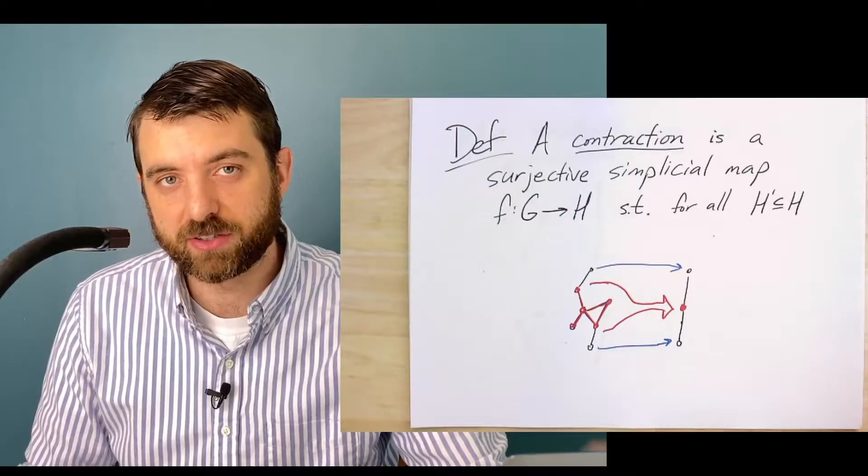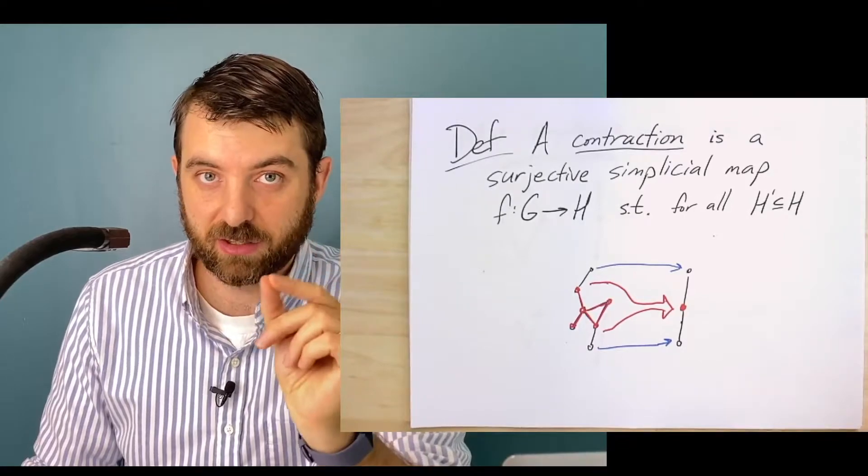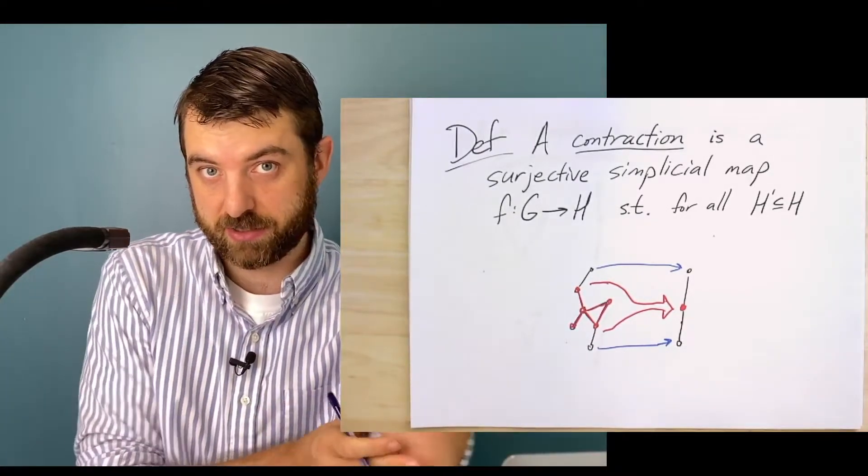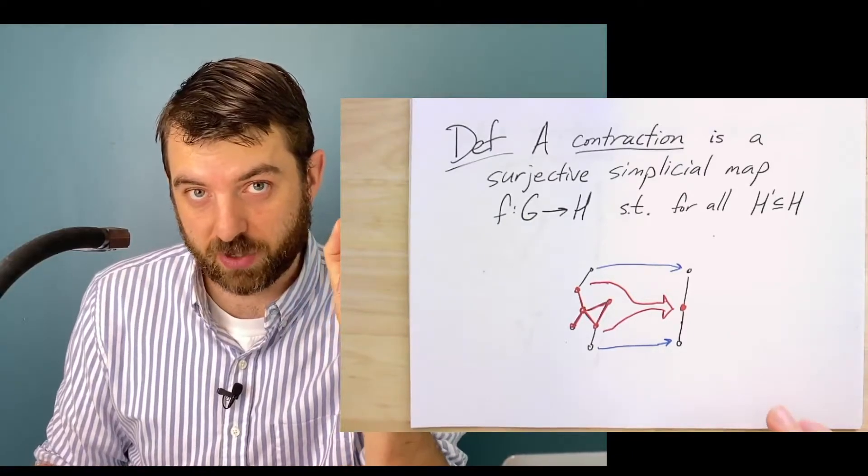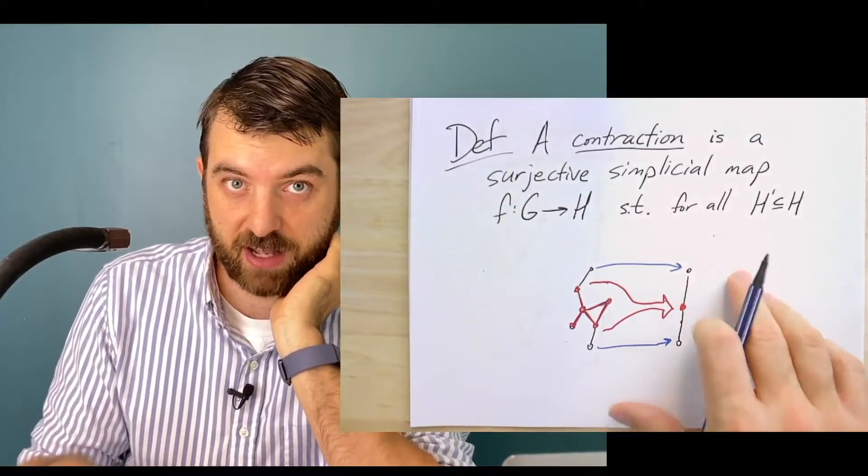And this is going to cover not only the single edge contractions, but in fact, a more general class of contractions. So when it's just one edge, we'll call that an edge contraction. But a contraction more generally is defined as follows.